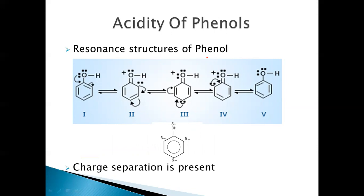There are five resonance structures, or canonical forms, possible for phenol. The OH is an electron-releasing group — a +M group — it will release electrons into the system. Five resonance structures are possible for phenol, and this is the resonance hybrid shown here.